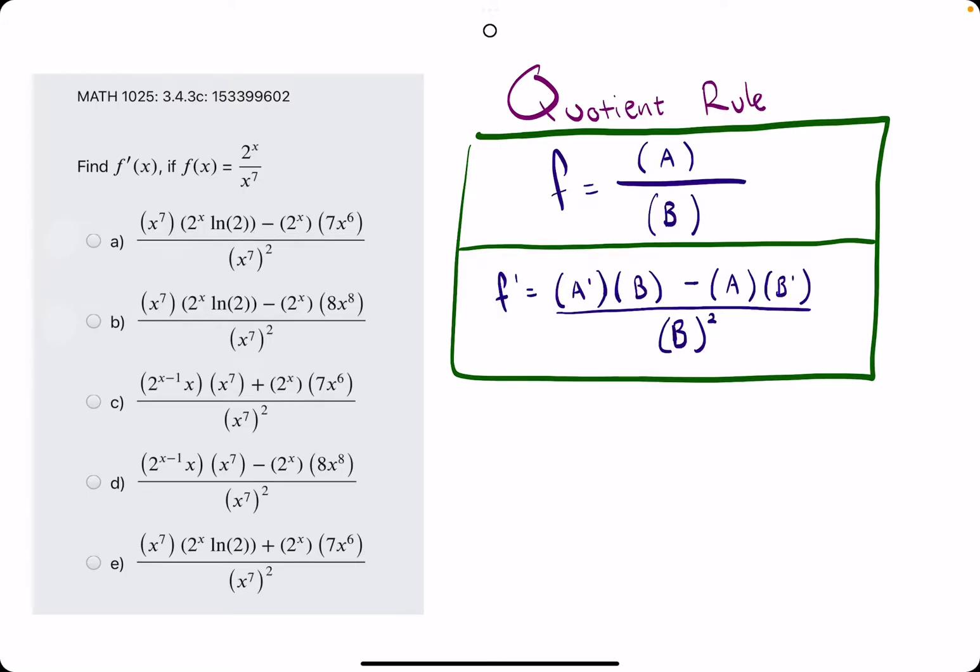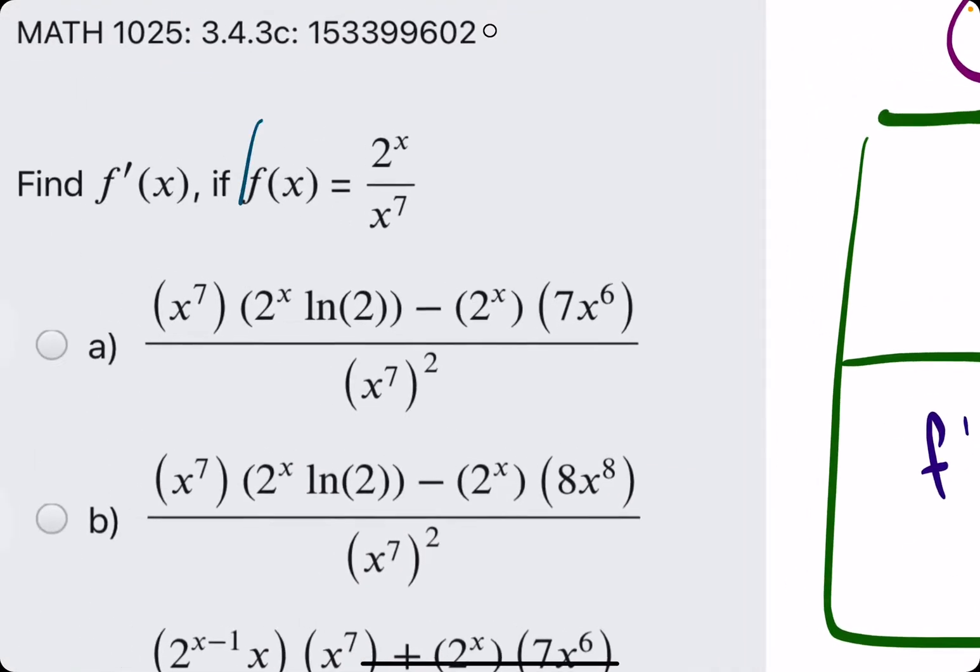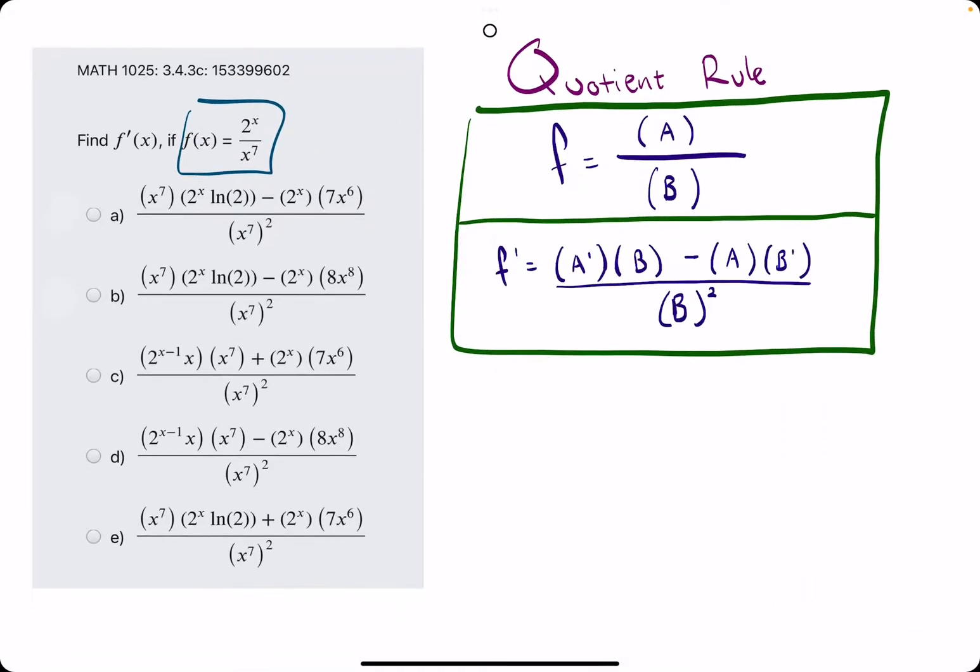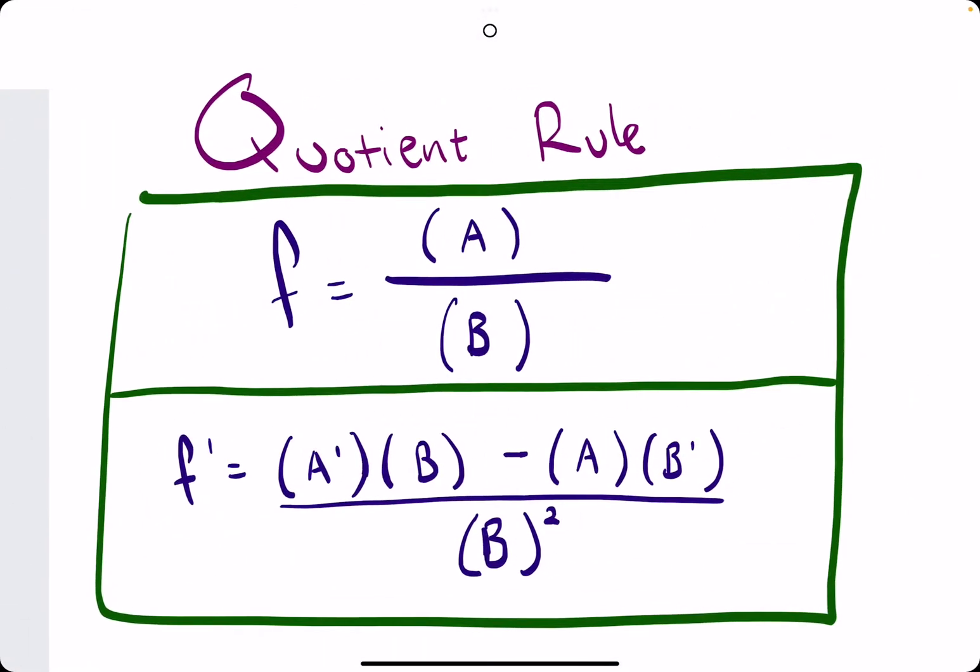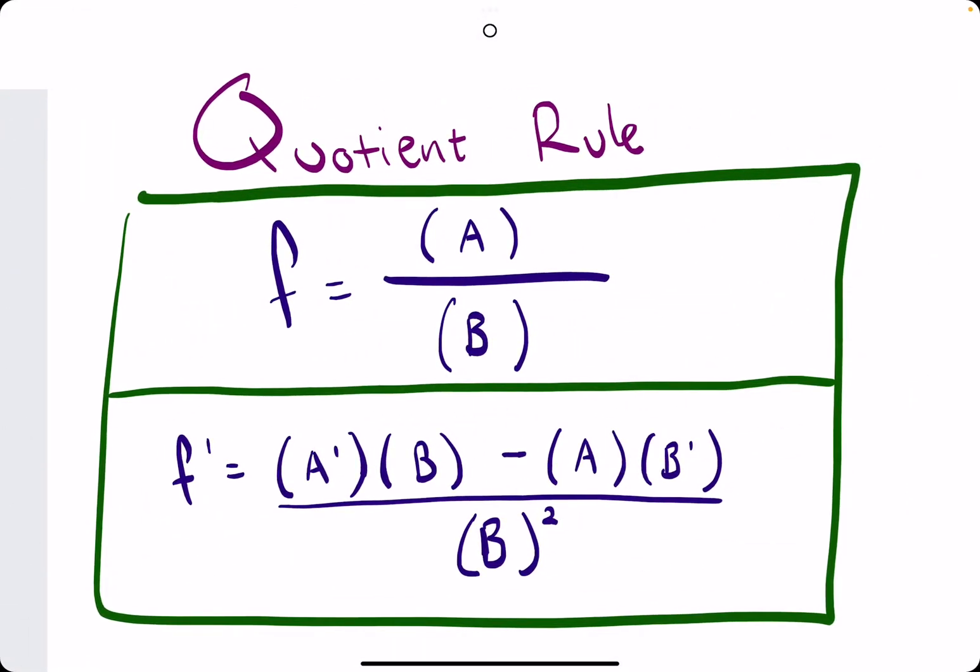Okie dokie. In this problem, we are given a function 2 to the x over x to the 7th, and the goal is to identify f prime, the derivative of this function. In this case, where we have an x term being divided by another x term, we have to use something known as the quotient rule.